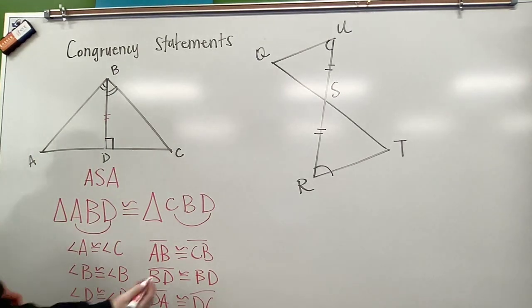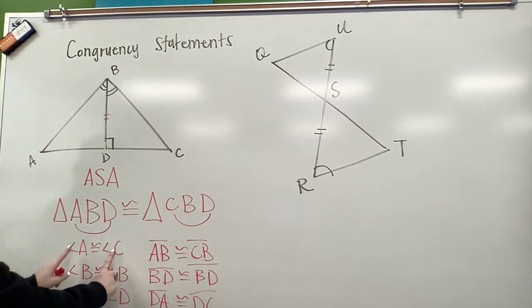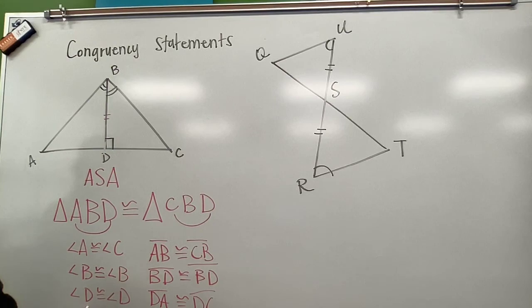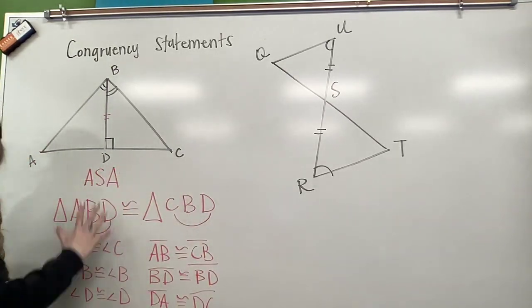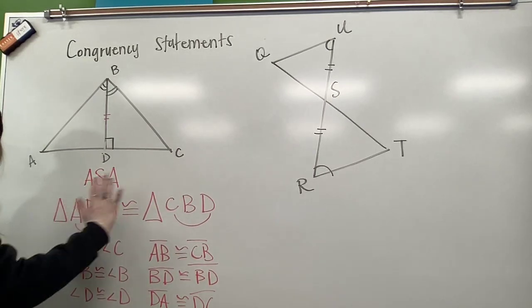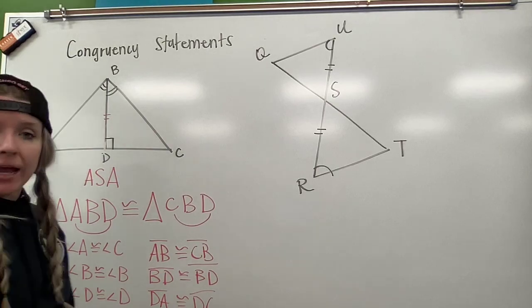So if you remember, we talked about how we had to know the 12 pieces of information. There's 1, 2, 3, 4, 5, 6, 7, 8, 9, 10, 11, 12. So this congruency statement is telling me what corresponding parts are congruent in two congruent triangles.